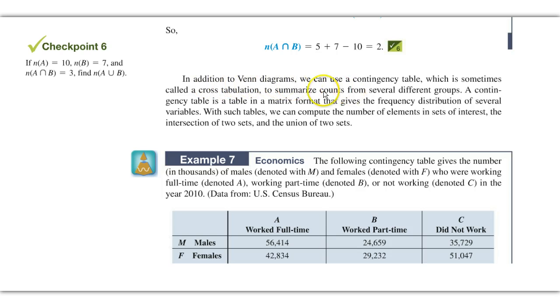So we are familiar then with Venn diagrams. We are going to take a look now at what is called a contingency table, which is sometimes also called cross-tabulation, that summarizes counts from several different groups. A contingency table is a table in a matrix form, where you sort of have columns and rows that give frequency distribution of several variables. With such tables, we can compute the number of elements in sets of interests, the intersection of these sets, and the union of these sets. So again, to get to our problem, we're going to have to go to our next page. But I have this in your booklet, so we can use that as a reference.